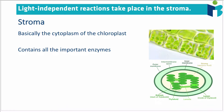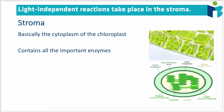The light-independent reactions, as the name suggests, do not depend on light, and this process occurs in the stroma of chloroplasts. A plant cell has organelles, one of which is a chloroplast. The light-dependent reactions happen in the thylakoids, but the light-independent reactions occur in the stroma, which contains all the important enzymes for these reactions.